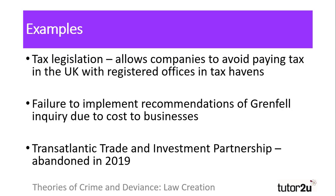There are many examples of laws that benefit the ruling classes. Whilst employees pay tax at source and at a flat rate, large businesses are able to utilise tax loopholes and avoid paying tax on their profits, as they have registered offices in tax havens such as Jersey, Switzerland and the Caribbean. An example of Snyder's argument that governments won't pass laws to the detriment of business comes from the recent refusal of government to put the recommendations of the Grenfell Tower fire into law, in part due to the cost to businesses of replacing cladding on buildings that is not flame retardant — a decision that has the potential to affect tens of thousands of people around the UK.